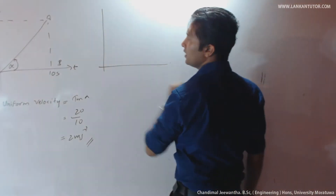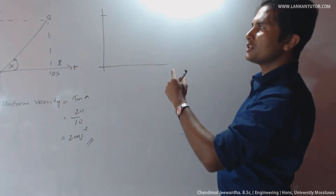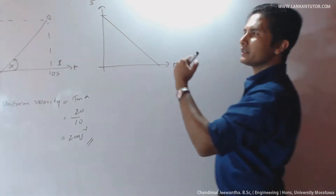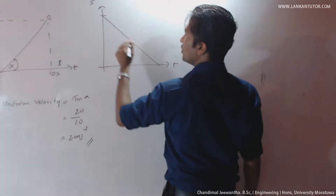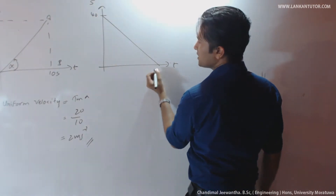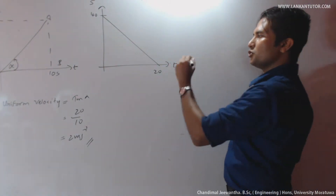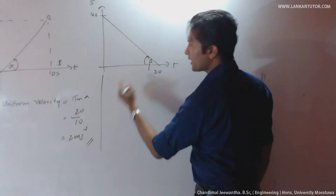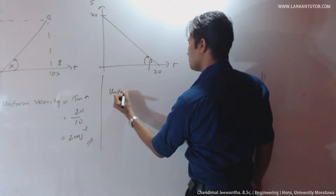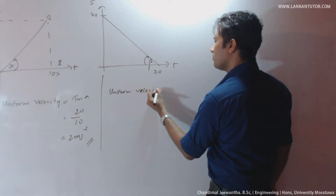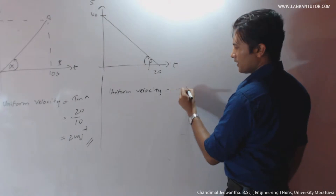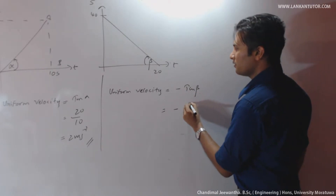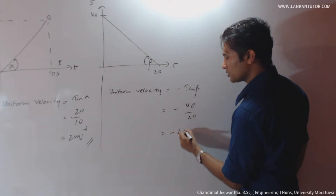As another example: object starts from positive displacement and moves with uniform velocity towards the negative direction. The displacement values are 40 and 20. To find uniform velocity towards the negative direction, take tan(β) — but it should be negative. So tan(β) = 40 divided by 20, giving minus 2 meters per second.